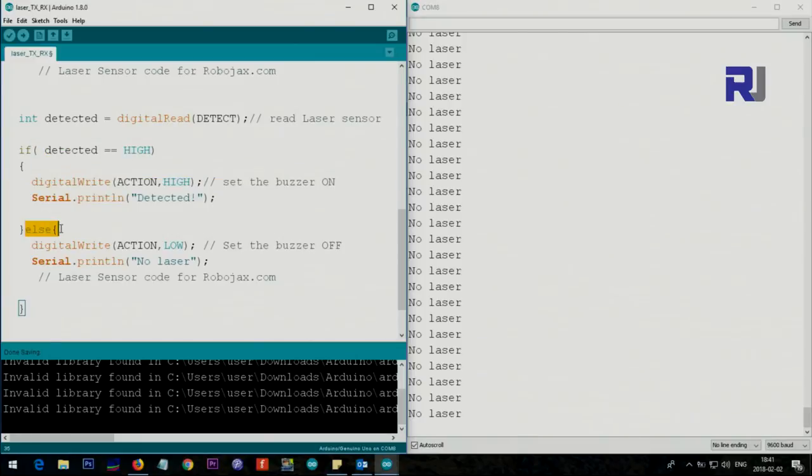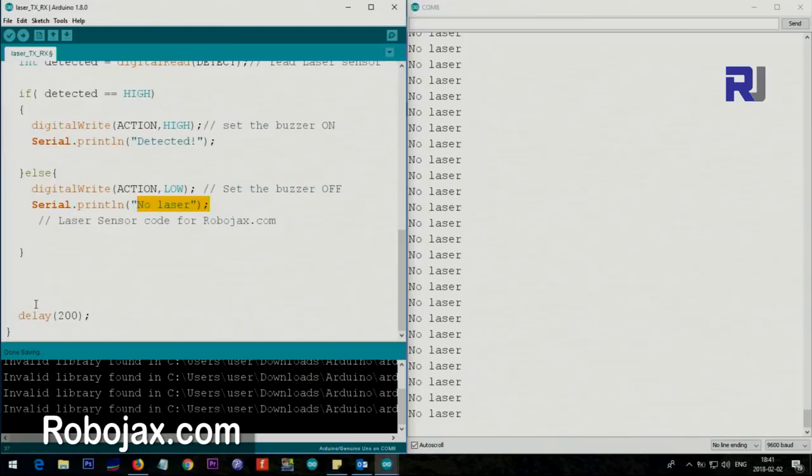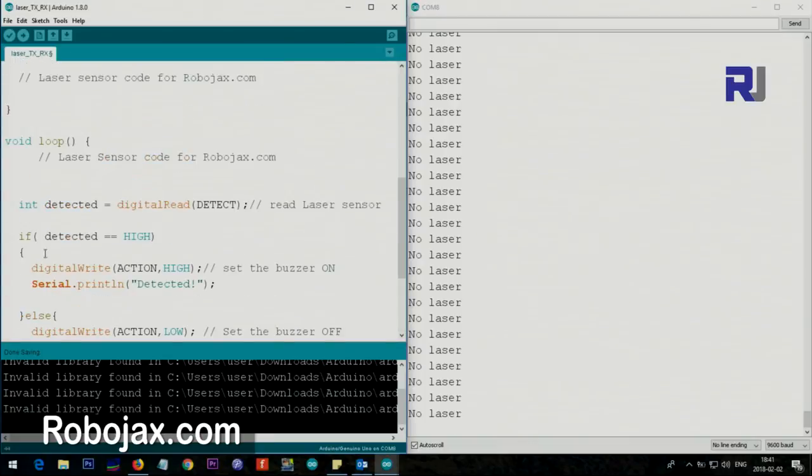So the buzzer will stop, as you can see the buzzer is now not making any buzz, and it says and also it prints no laser. After that we just wait 200 milliseconds, which is one-fifth of a second, so five times a second it just reads it. After this it goes and the loop continues.